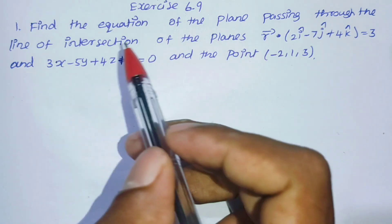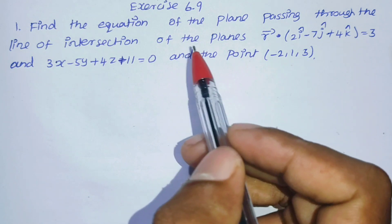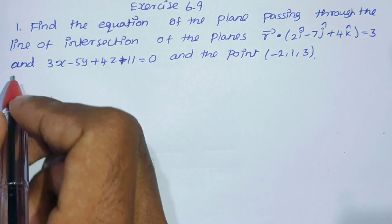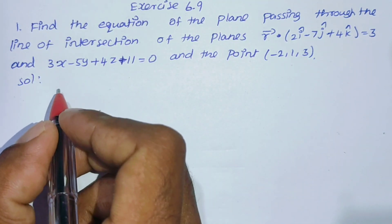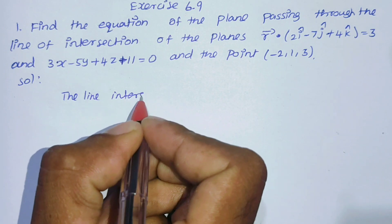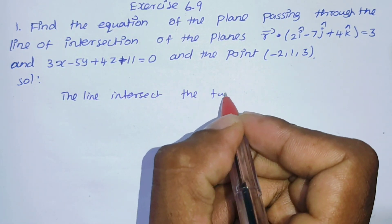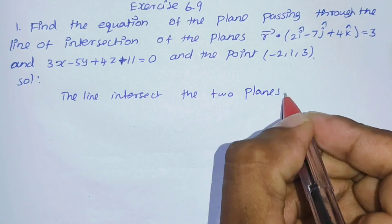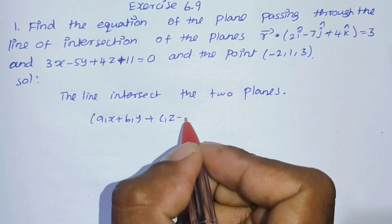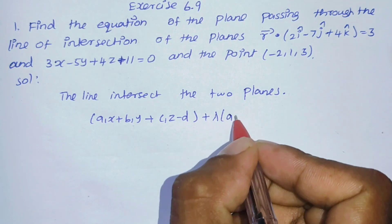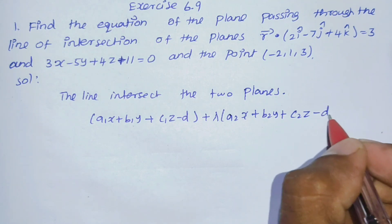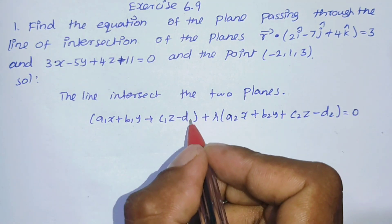When two planes intersect, and the resulting plane passes through the point (-2, 1, 3), we apply the condition theorem. The condition theorem for the plane passing through the line of intersection of two planes is: a1x plus b1y plus c1z minus d1 plus lambda of a2x plus b2y plus c2z minus d2 equals 0.